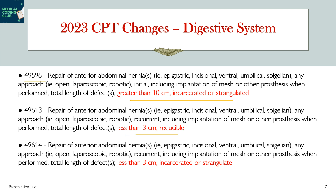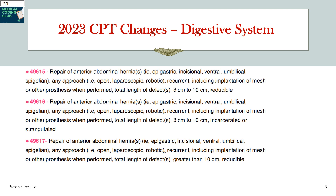Code 49615 covers 3 cm to 10 cm reducible hernias. Code 49616 is also 3 cm to 10 cm but incarcerated or strangulated. Code 49617 is for defects greater than 10 cm incarcerated or strangulated.